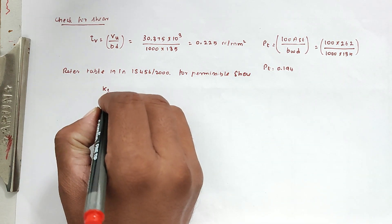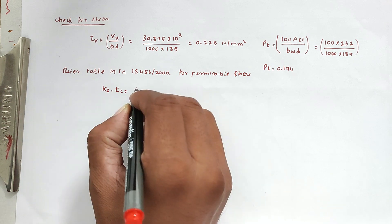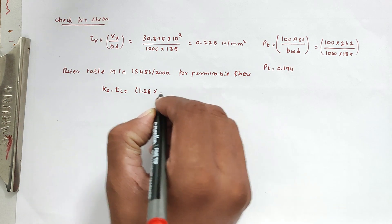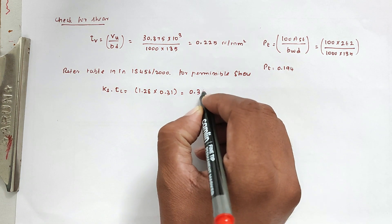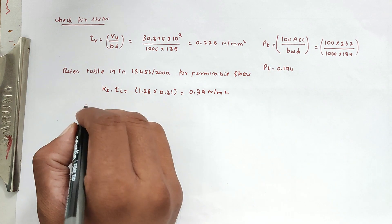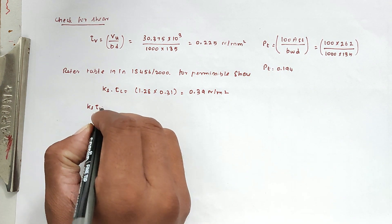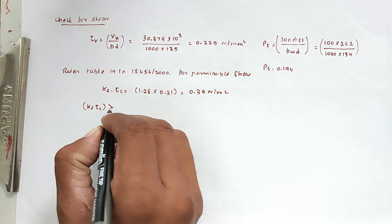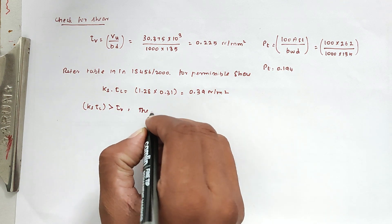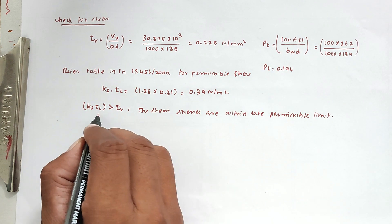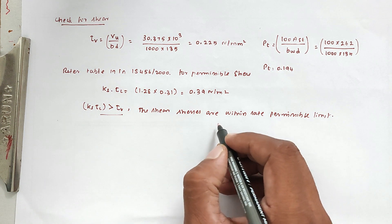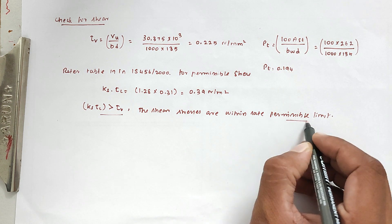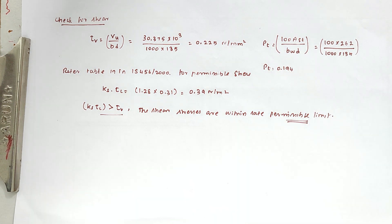From Table 19, ks × τc = 1.28 × 0.31 = 0.39 N/mm². Since ks × τc (0.39 N/mm²) > τv (0.225 N/mm²), the shear stress is within the safe permissible limit. This completes the slab design using the yield line theory method. Thank you, we will see the next problem in the next video.